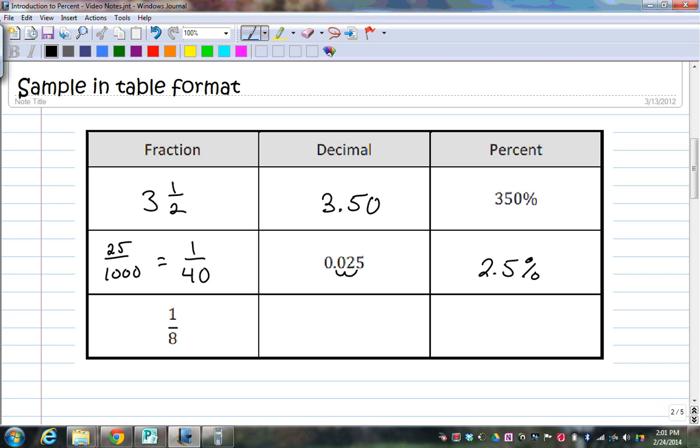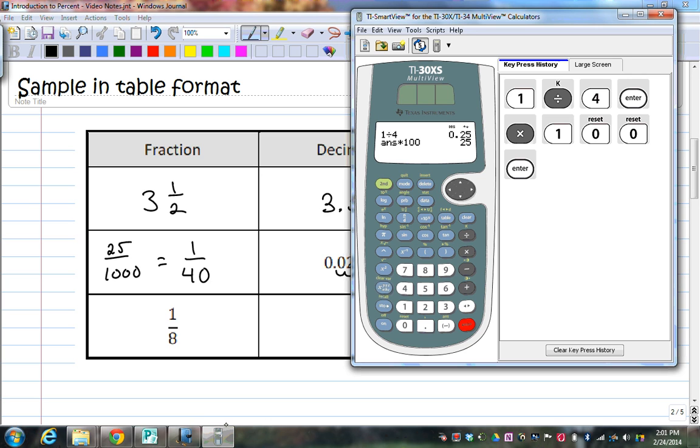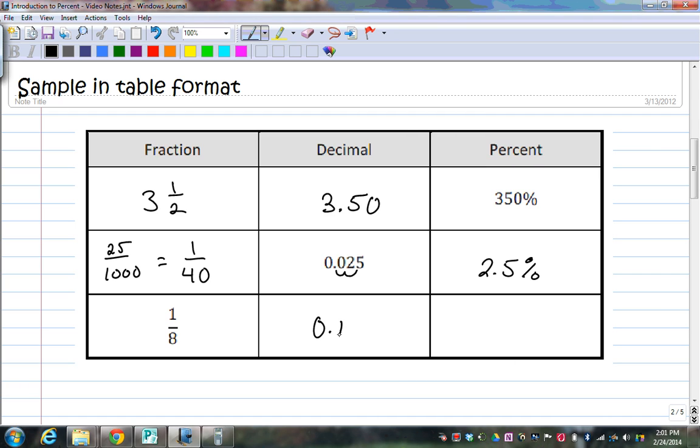Now, I have 1 eighth and I want to change that to a decimal. So I'll go up here. We do 1 divided by 8 is 0.125. So 0.125. Again, to change that to a percent then, move the decimal two places to the right. 12.5 and add the percent sign. Pretty cool, right? Awesome.